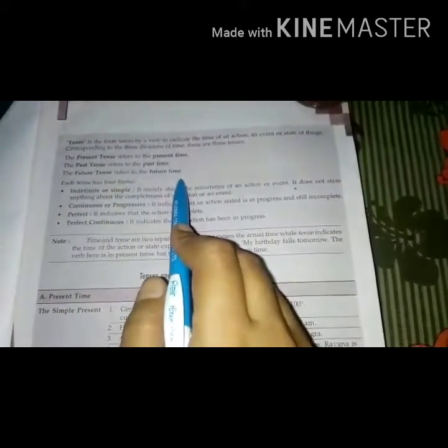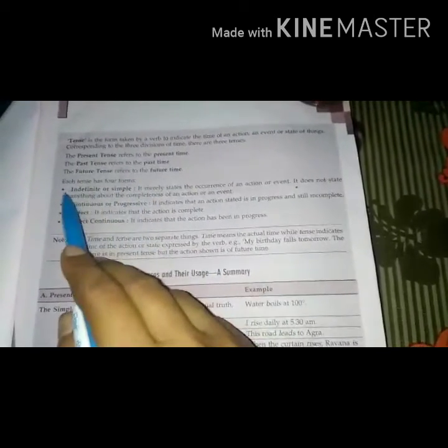Tense is the form taken by a verb to indicate the time of an action, an event or state of things. Corresponding to the three divisions of time, there are three tenses. The present tense refers to the present time. The past tense refers to the past time. The future tense refers to the future time. Each tense has four parts.